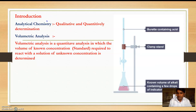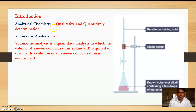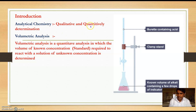So firstly, we see the introduction of this topic. This topic belongs to analytical chemistry. Analytical chemistry is the branch of chemistry that deals with the study of qualitative as well as quantitative analysis of any substance — that is, an analytical technique to determine how much substance is present and their quality. These are mainly divided into two types: volumetric analysis and gravimetric analysis.